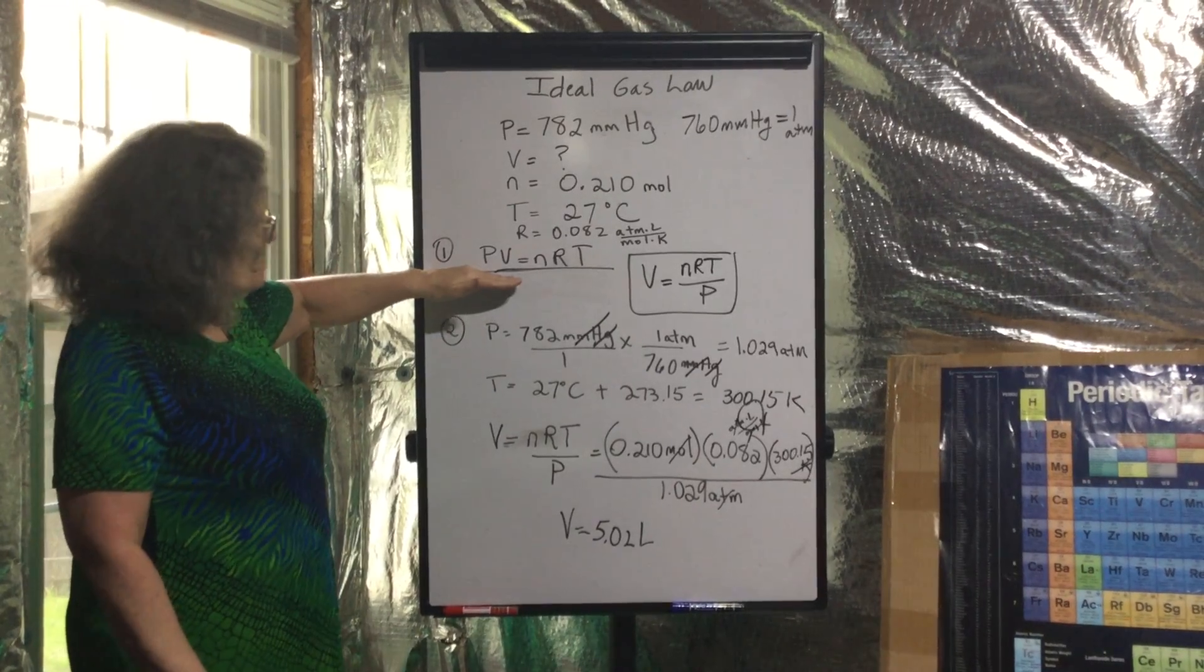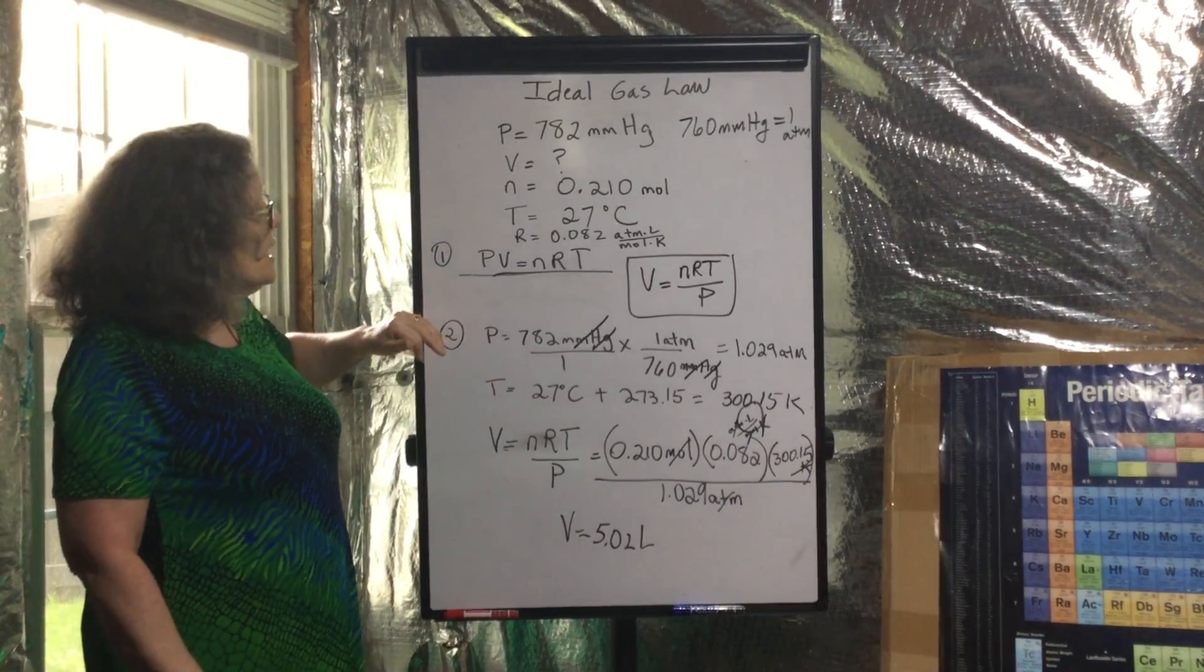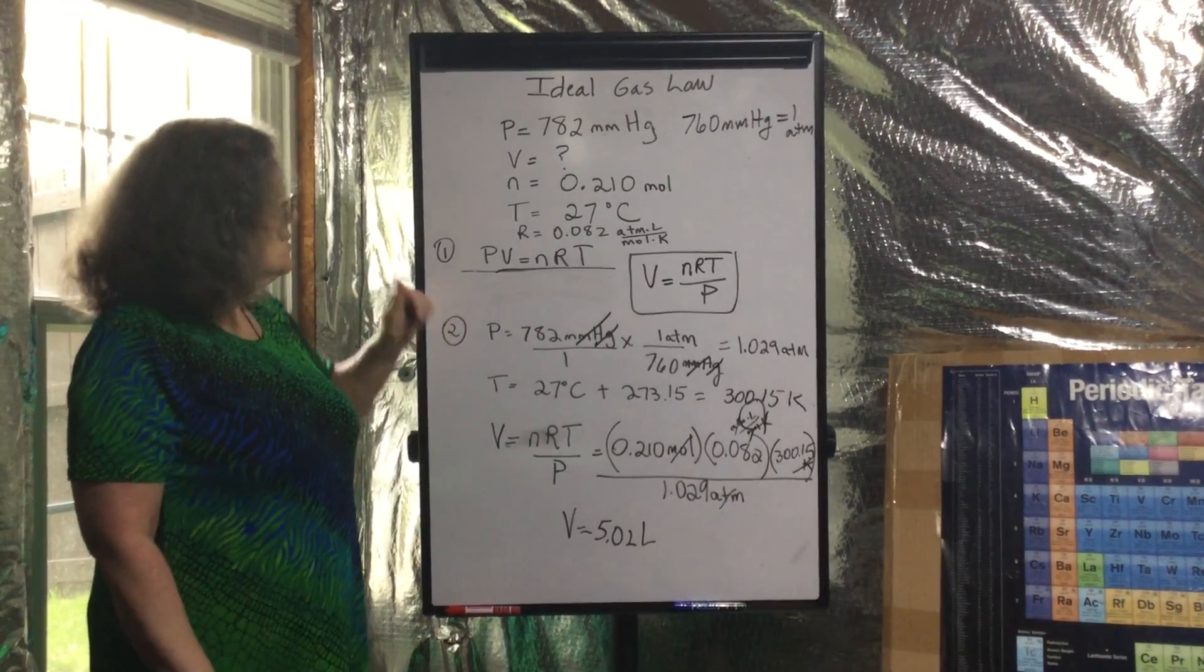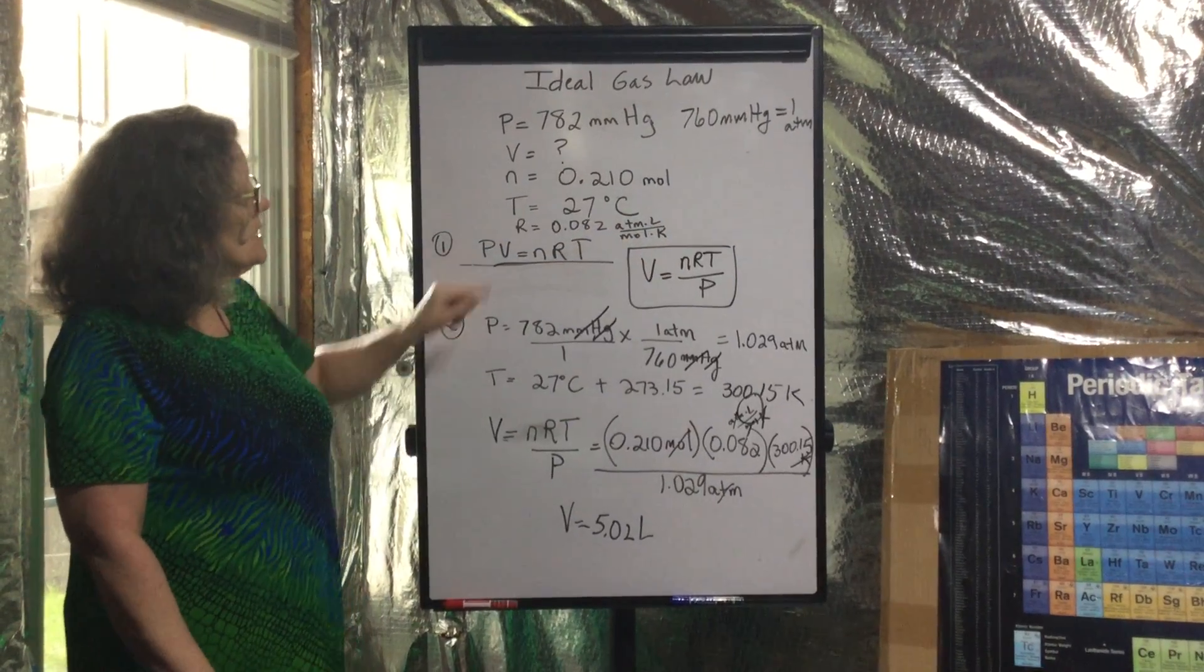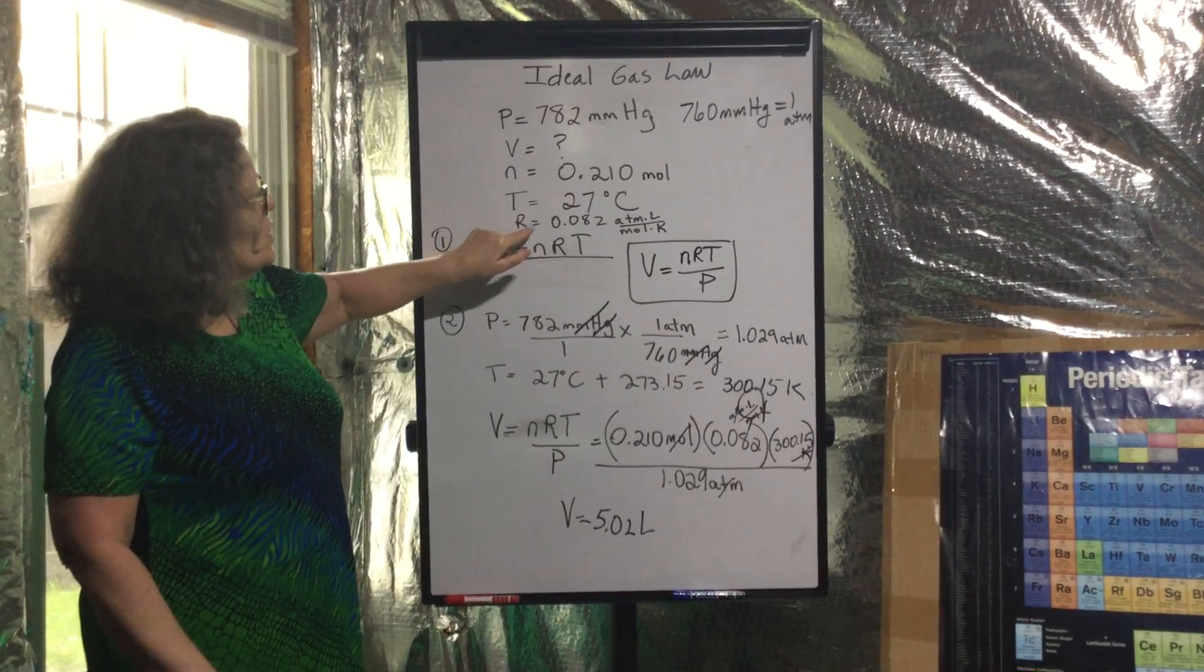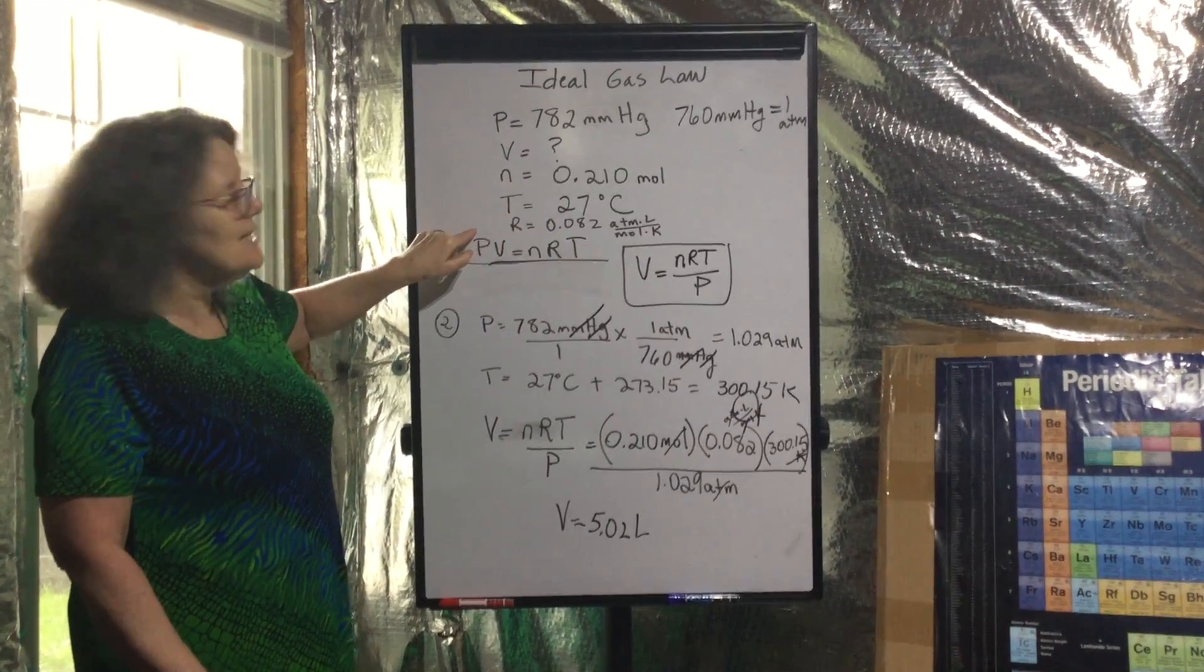So we have our equation. We go through and we make sure all the units are in atmospheres, liters, moles, Kelvin. So we can cancel out when we solve, because that's the units for this number, 0.082, for the R, the gas constant.